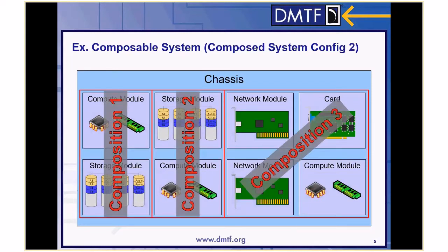Later, a client changes the compositions in the system. The left two modules form one composition, the next two modules form a second composition, and the right four modules form a third composition. Without changing the hardware configuration, the client was able to restructure the three logical computer systems.